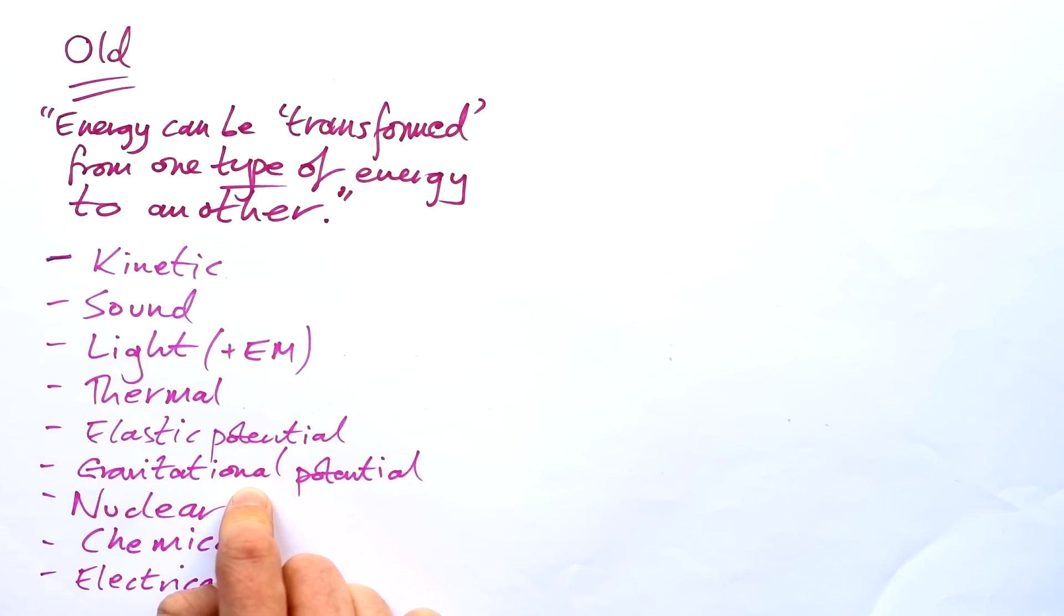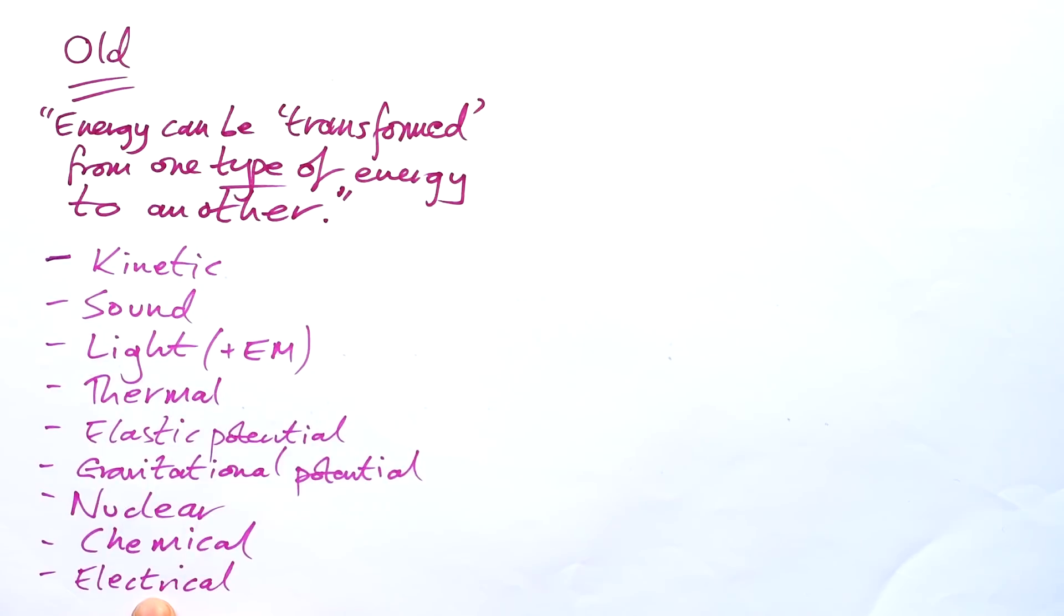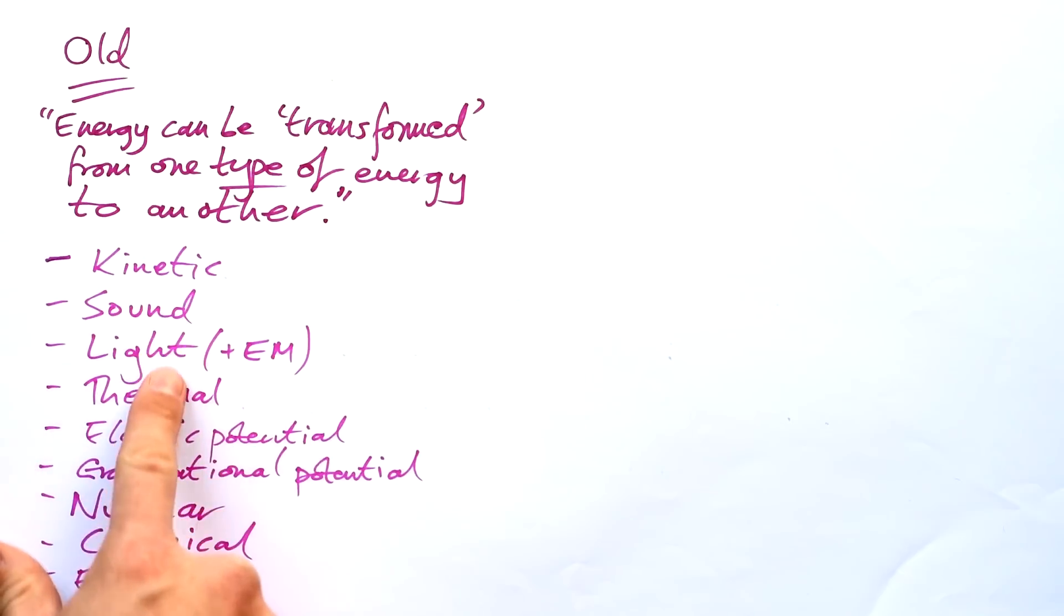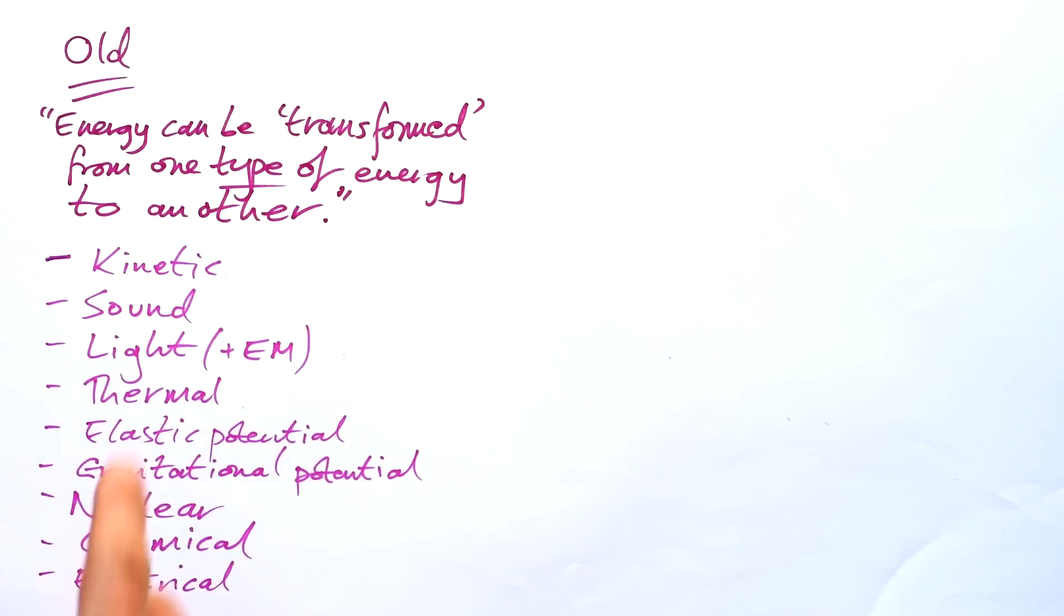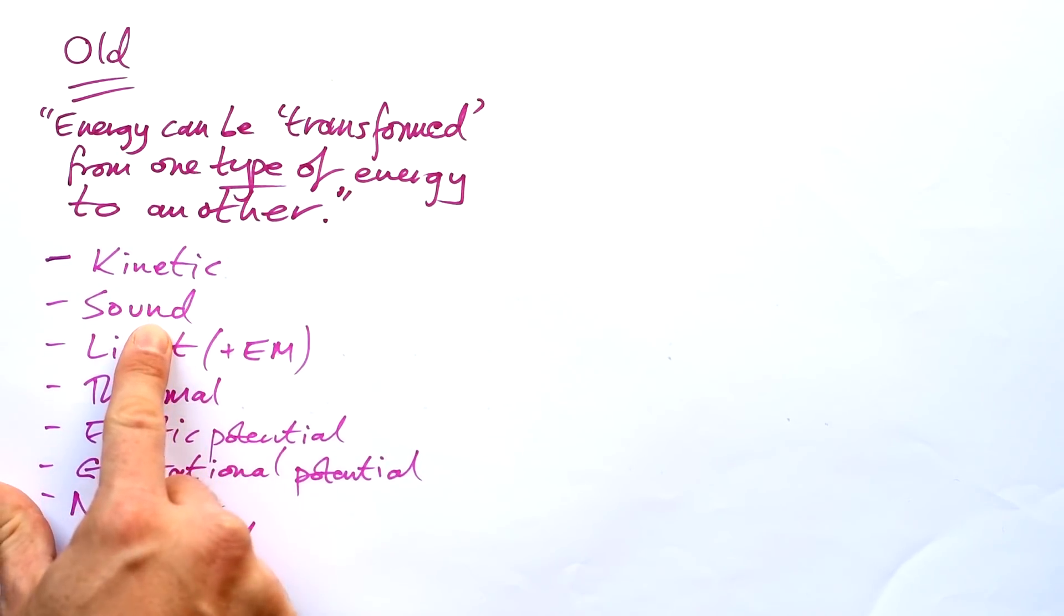Gravitational potential - things that are high have this. Nuclear, very important but not something we put a number to until A-level physics. Chemical - the fact that when a chemical reaction happens energy is released or taken in by the reaction. And electrical - the fact that electrons can have energy. Now when I teach this to my year sevens, I make it clear that objects can have these different types of energy to greater or lesser degrees.